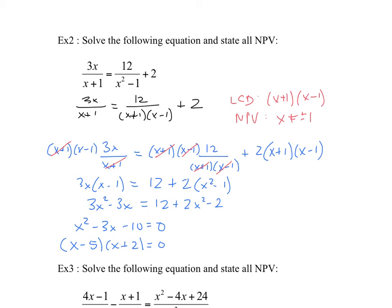We have two solutions: x equals 5 and x equals negative 2. Notice that neither one of these is a non-permissible value, so that's good. Unless you made a mistake, these will always work as long as they're not non-permissible values. For time purposes, I'll let you verify those yourself, but both are solutions to this problem.